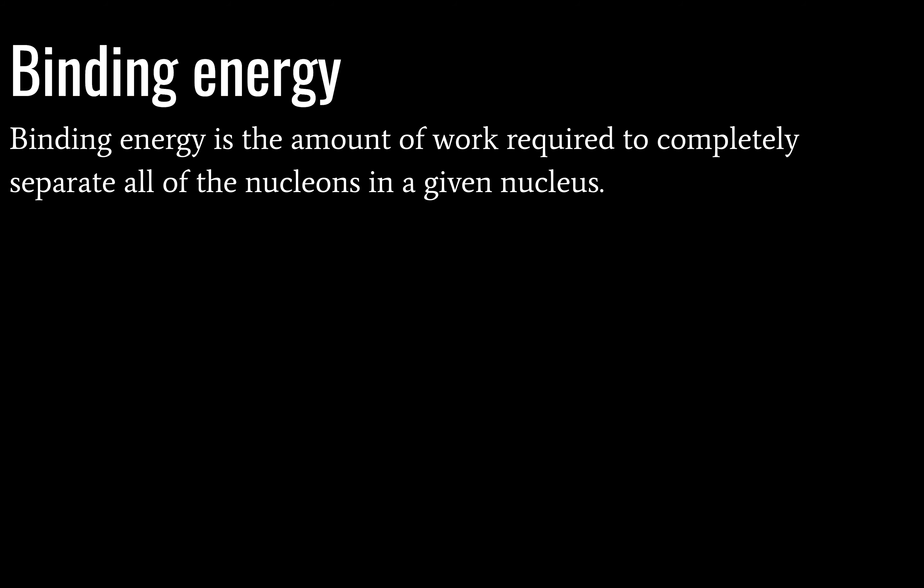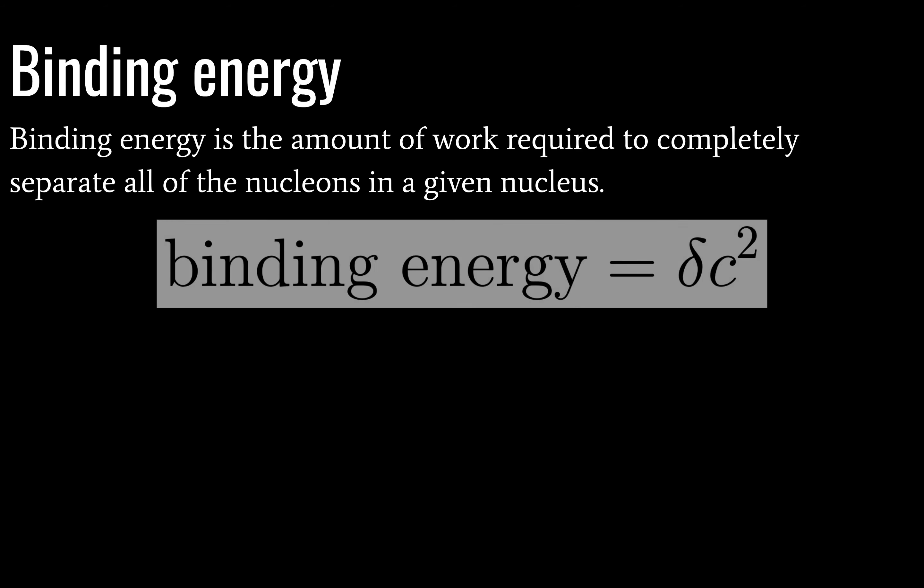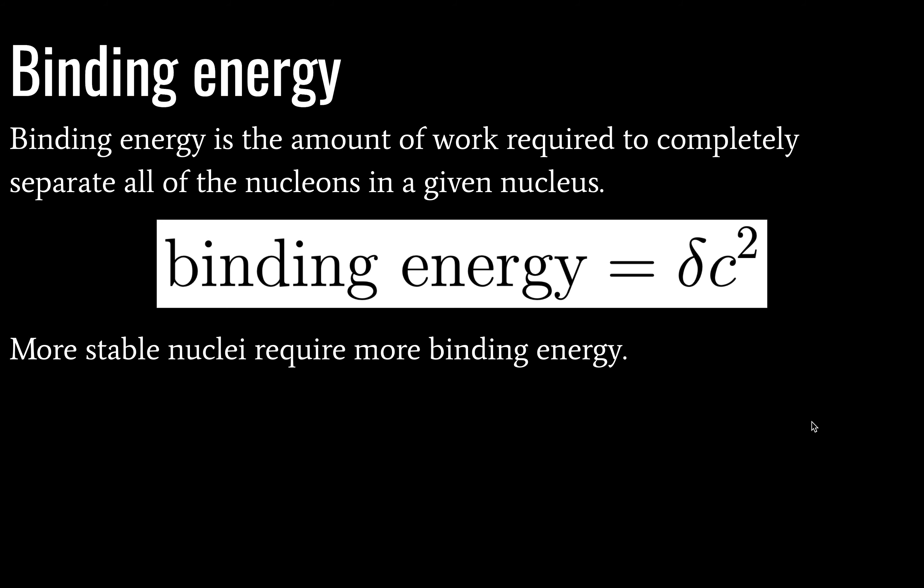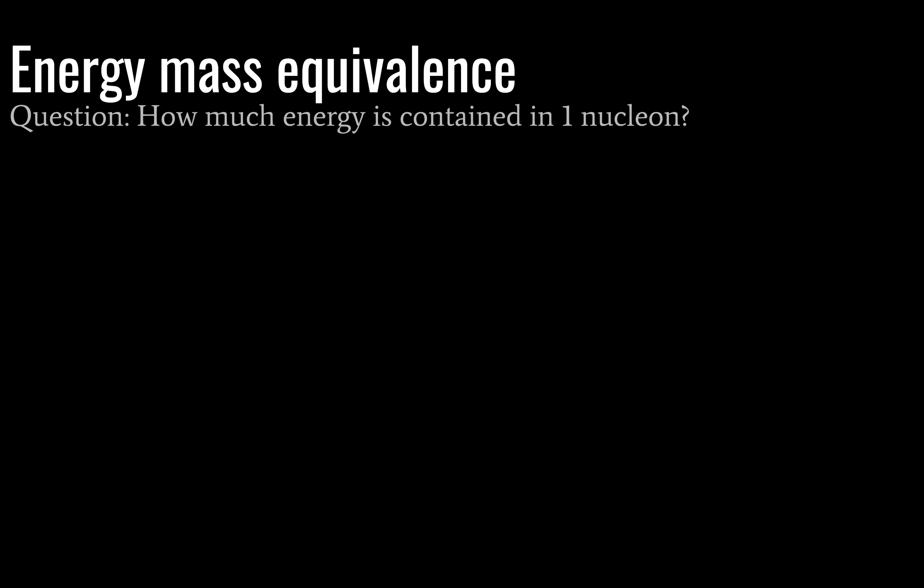This is similar to chemical bonds, where if you're going to break something up, you have to add energy. Slightly counterintuitive until you remember my magnet analogy. So binding energy is the amount of work required to completely separate all of the nucleons in a given nucleus. Binding energy is going to be given by mass defect times the speed of light squared. More stable nuclei will require more binding energy. Question, how much energy is contained in one nucleon?